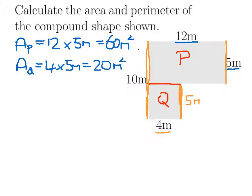The total area of the L shape is going to be 20 plus that 60, and that gives us 80 metres squared overall.